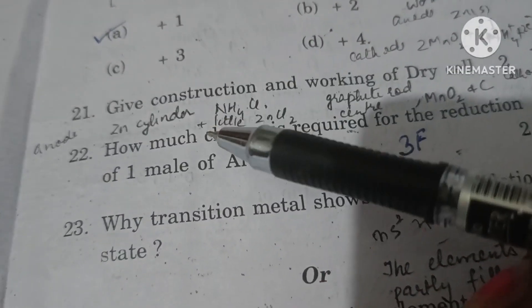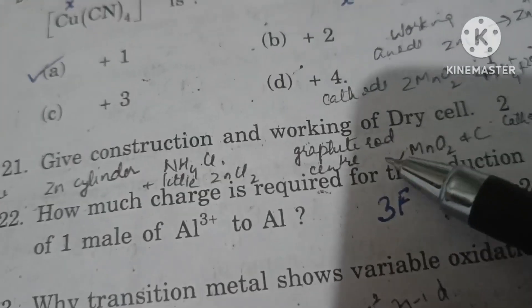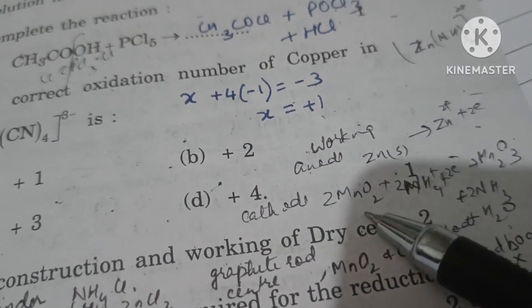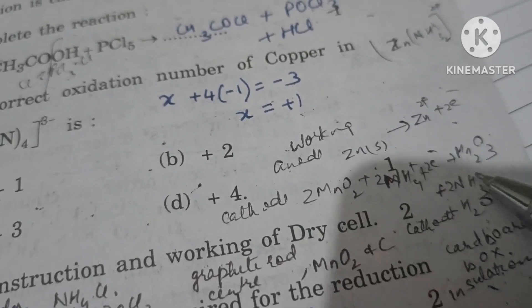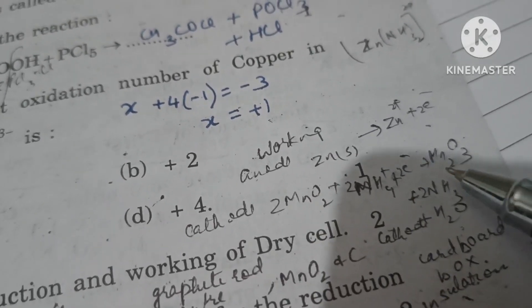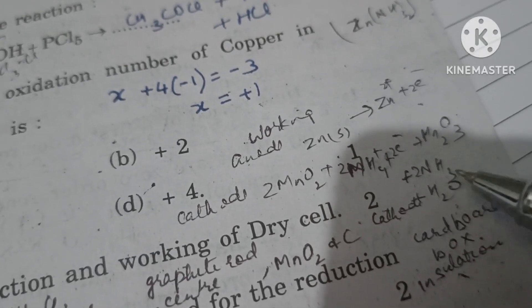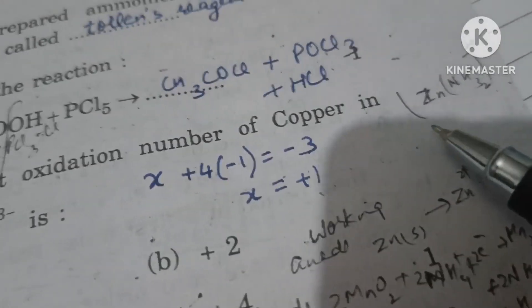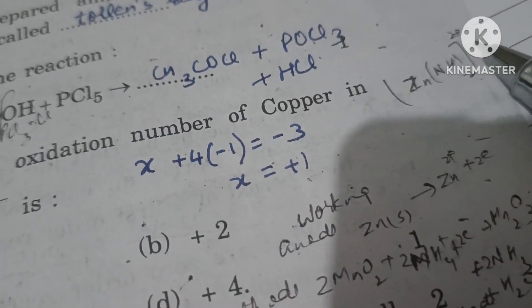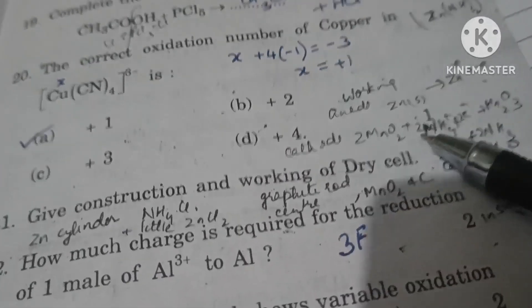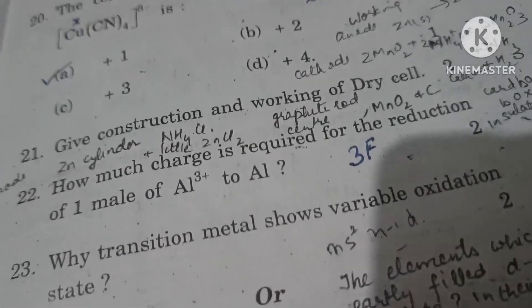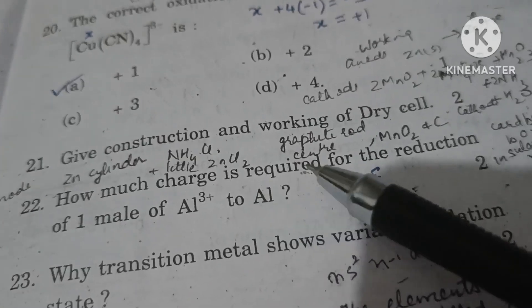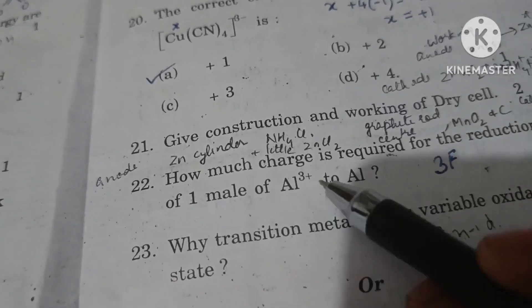Zinc acts as the anode. At the cathode, manganese dioxide in the presence of ammonium ions accepts electrons and gets reduced. The ammonia and water produced do not escape as gas — instead zinc forms a zinc complex, and in this way current production in the cell occurs.